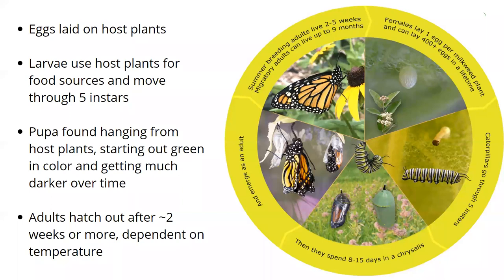The chrysalis starts out as a very bright jade-like green, and then as the pupa develops further it'll become translucent and you'll actually be able to see the butterfly inside it. That's going to happen for about two weeks. This is all very dependent on temperature as well — insects rely on temperature very heavily for their development, whether they're an egg, caterpillar, or pupa. The higher the temperature, the faster they'll develop. So two weeks is probably your optimal speed at the optimal temperature.